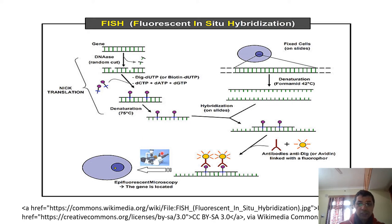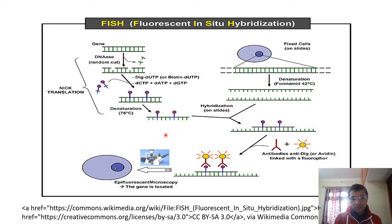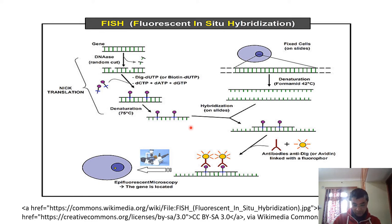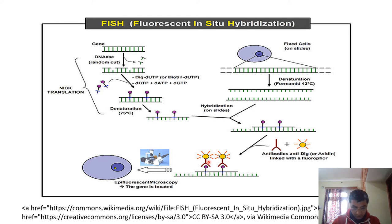For this technique, you need a specific set of solutions: you need some protease solution, 1% formaldehyde solution, 20X SSC solution, and from that you can make 2X and 0.4X SSC solutions. You also need 40% formalin and phosphate buffer with triple-distilled water.